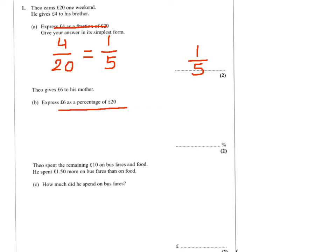Now for part b, £6 as a percentage of £20. I will write 6 over 20 times 100. We know that 100 divided by 20 is 5, so it's 6 times 5, which equals 30%.